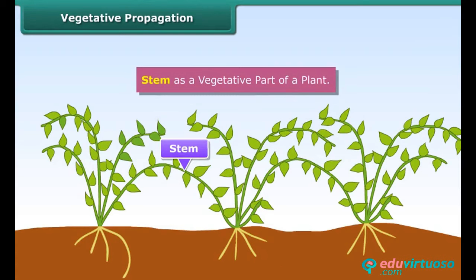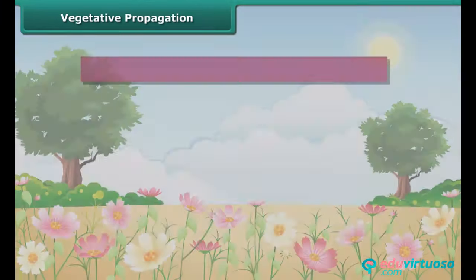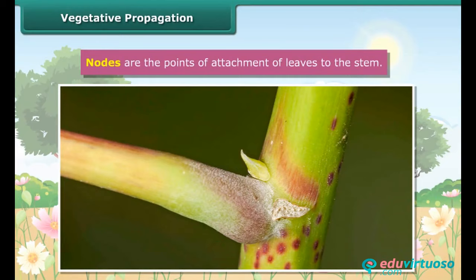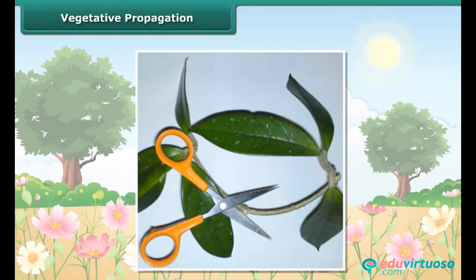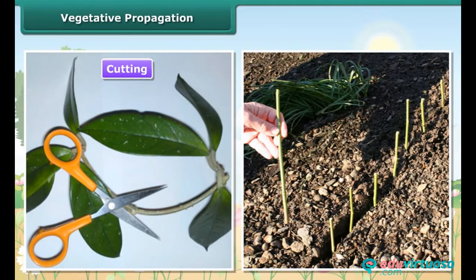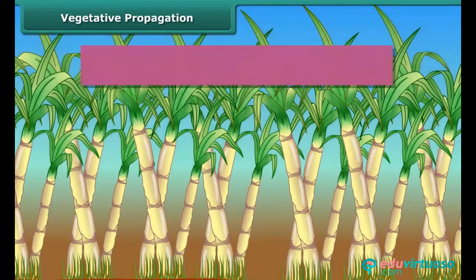Stem as a vegetative part of a plant. Have you ever seen buds at the nodes of the stem? These buds are called axillary buds. These buds do not produce flowers; rather they give rise to new branches. In some plants like rose, small portions of the stem containing small nodes are cut from the plant. These cut portions are called cuttings.